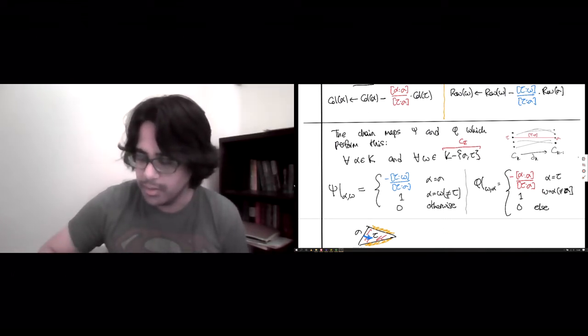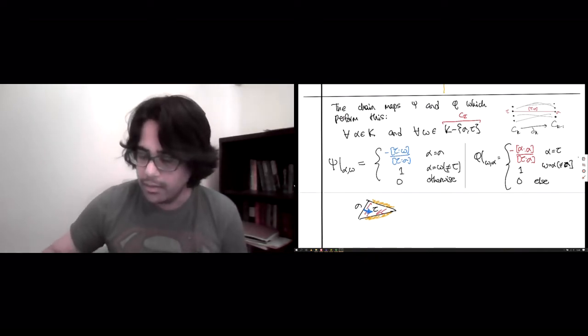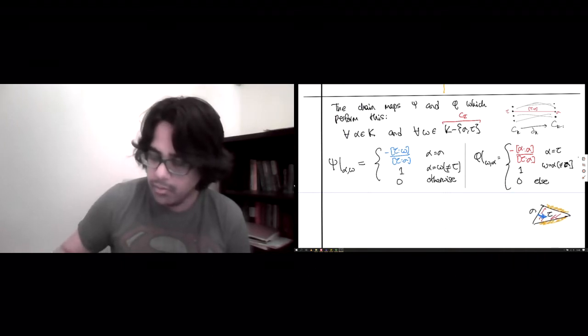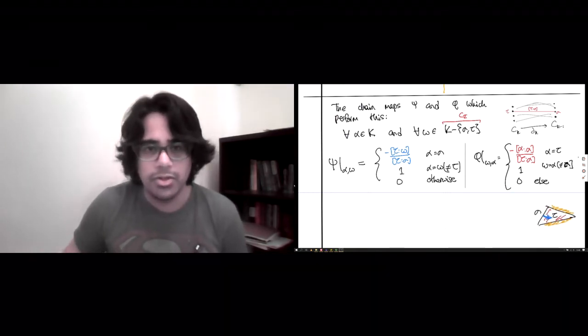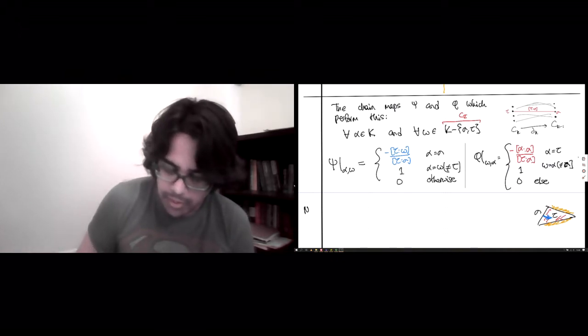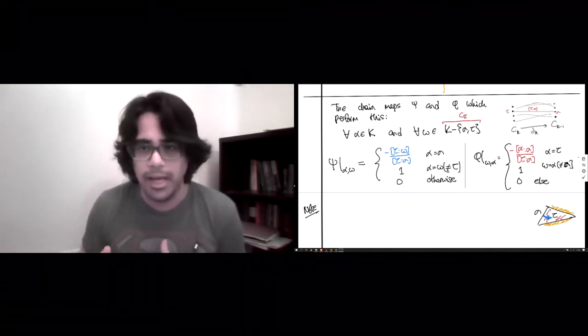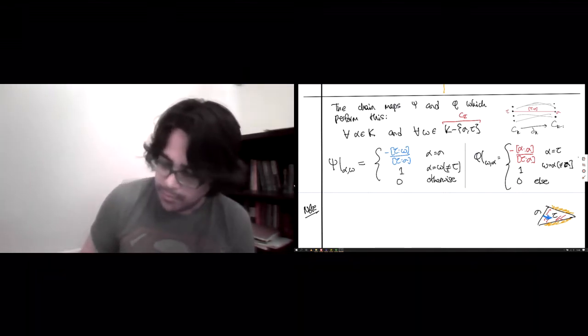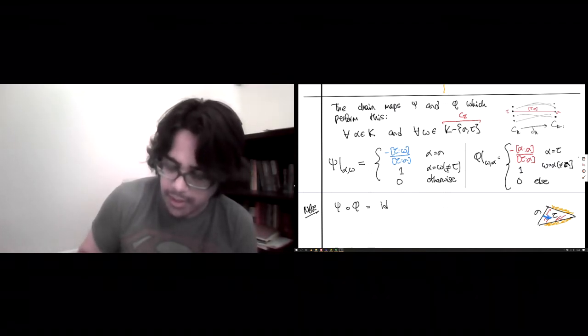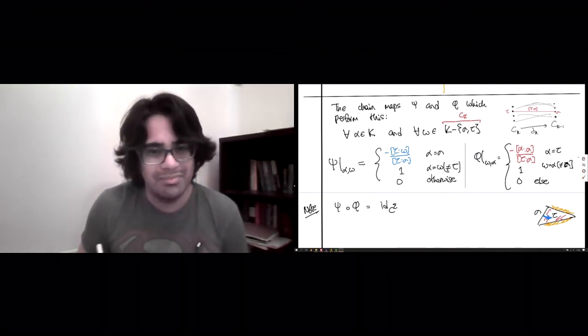And, these two, so, we want the last bit of information we need is why these are chain homotopy equivalents. So, you can calculate. It's quite straightforward. I mean, the definitions are piecewise, but it's not so bad to check. That, if you do phi followed by psi, this is actually equal to the identity on the Morse complex. So, not so bad.